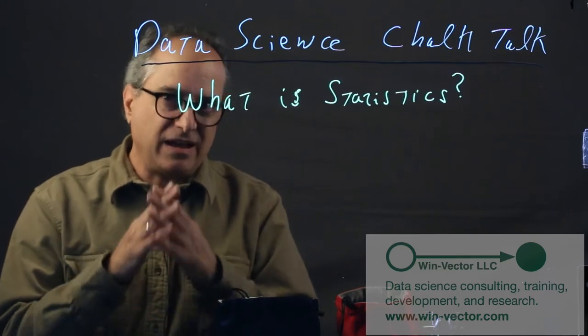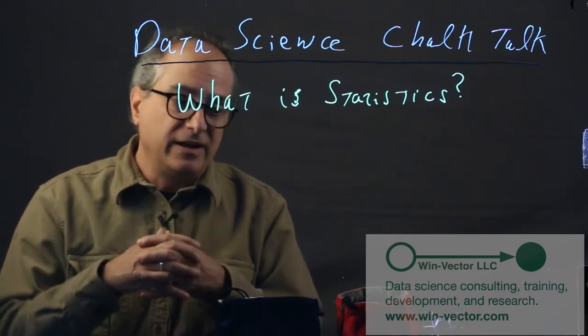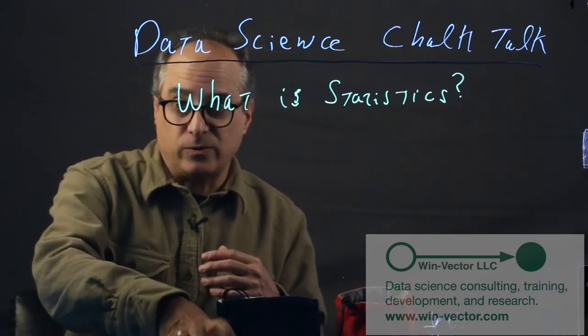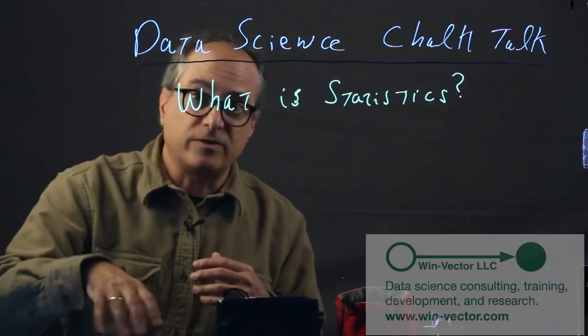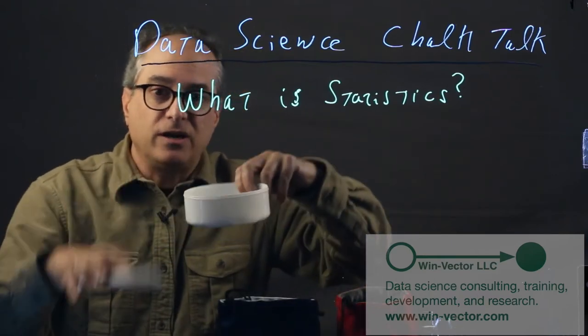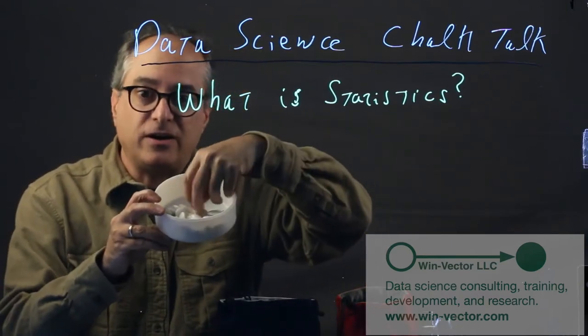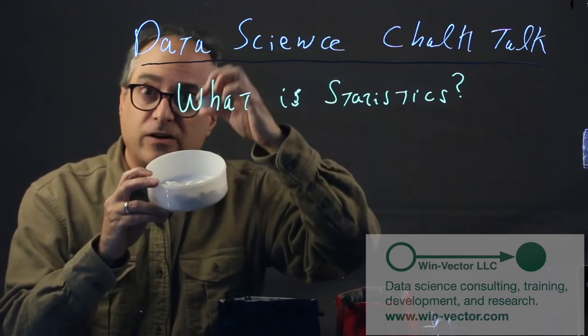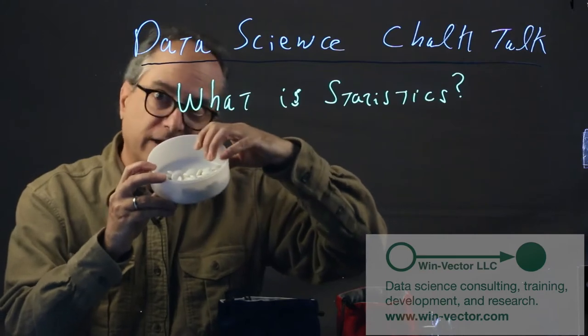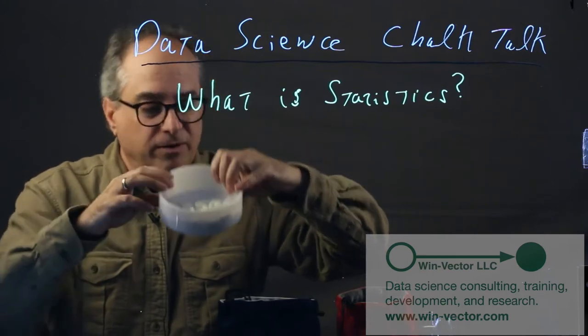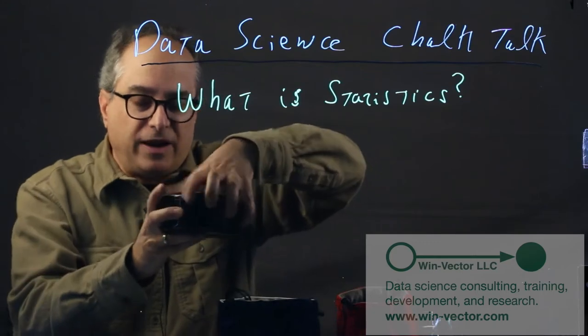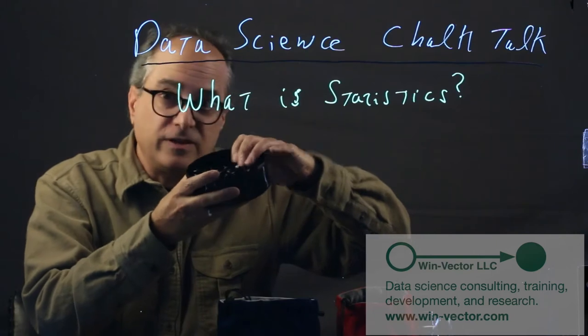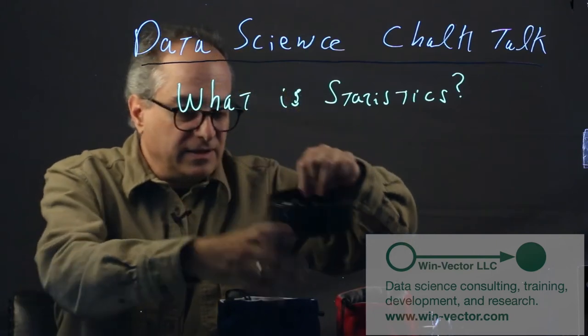So the reason we tend to care or our clients tend to care is they often have a marketing problem that they have a population that they can interact with and it costs money for them to interact with this population. And some of the population are blanks. They essentially are entities that will not click on the ad or will not respond to the letter or call. So basically the majority of the prospects are blanks. And some fraction of the prospects are filled in, are black. So these are the ones that are valuable.